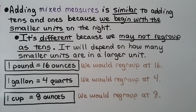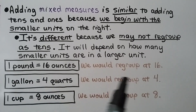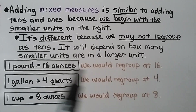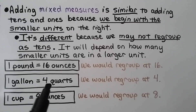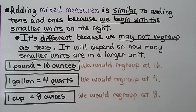Adding mixed measures is similar to adding tens and ones because we begin with the smaller units on the right. It's different because we may not regroup as tens — it will depend on how many smaller units are in a larger unit. If we're doing pounds and ounces, one pound is equal to sixteen ounces, we would regroup at sixteen. One gallon is equal to four quarts, we would regroup at four. One cup is equal to eight ounces, we would regroup at eight.